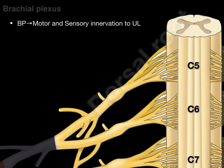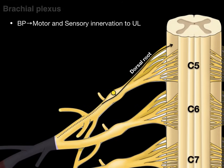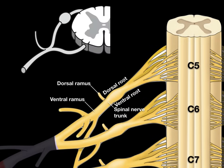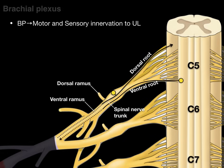If we zoom in and take a look, there's the dorsal root of the C5 level with its sensory neuron coming in with its cell body in the dorsal ganglion, and there's the ventral root with the motor neuron coming out. The ventral and dorsal roots come together to make a spinal nerve trunk, which then gives rise to a dorsal and ventral ramus. These roots make a spinal nerve trunk and two rami — this occurs at each segmental level between C5 and T1.